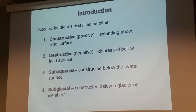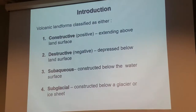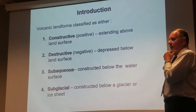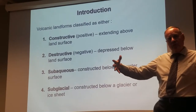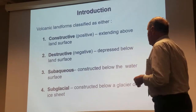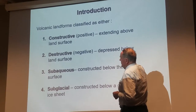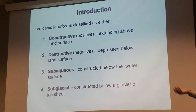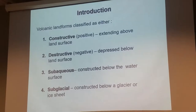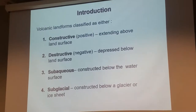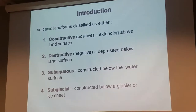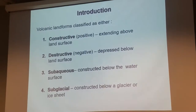So basically, just to give you a quick introduction, we're going to divide the different landforms into four categories: constructive, which means the landform is being built above the land surface; destructive, which means they're depressed below the land surface; subaqueous, meaning formed under water; and subglacial. Most subglacial landforms are found in northern latitudes. A lot of the names for those came from Iceland, which is volcanically active with glaciers — lots of volcanoes erupting under glaciers.